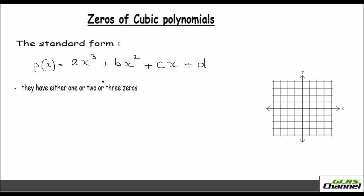Since the highest degree is 3, we know that the maximum number of zeros you can get in this polynomial is 3. So you can either have one zero for a cubic polynomial, or you can have two zeros, or sometimes three zeros. So let's see each case.